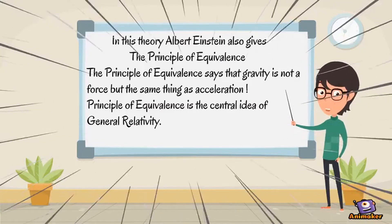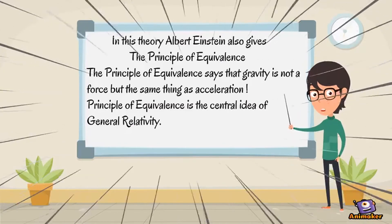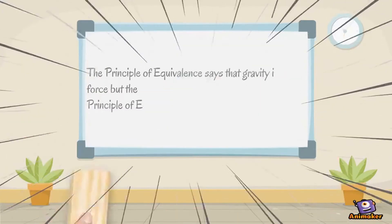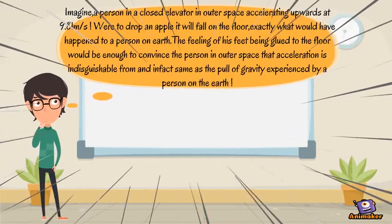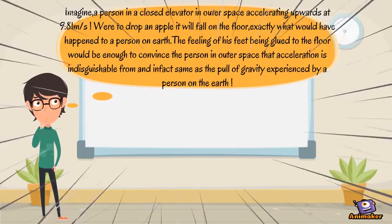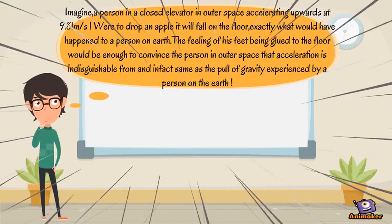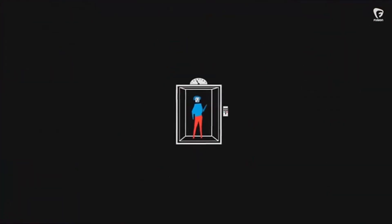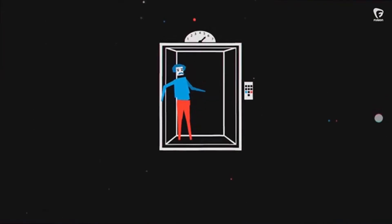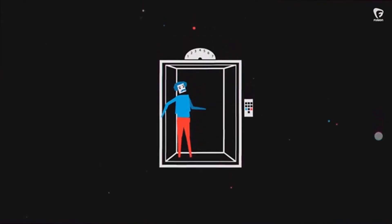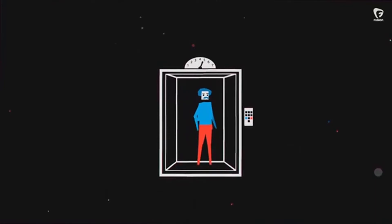Imagine a person in a closed elevator in outer space accelerating upwards at 9.81 meters per second squared. Were they to drop an apple, it will fall on the floor — exactly what would happen to a person on earth. The feeling of their feet being glued to the floor would be enough to convince the person in outer space that acceleration is indistinguishable from, and in fact the same as, the pull of gravity experienced by a person on earth.